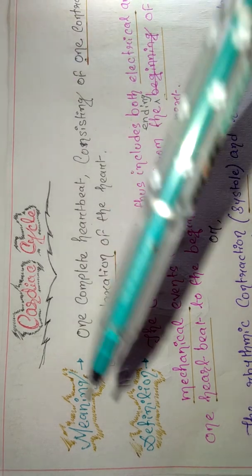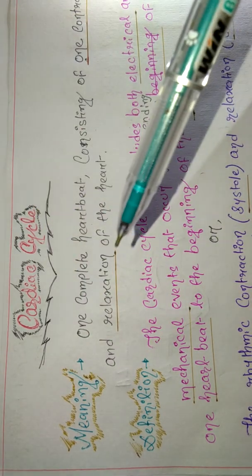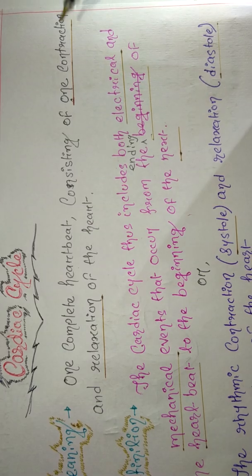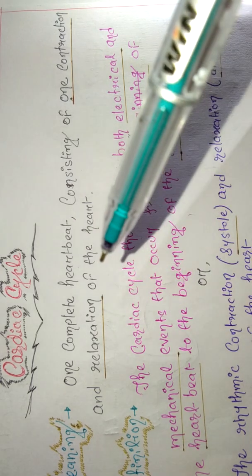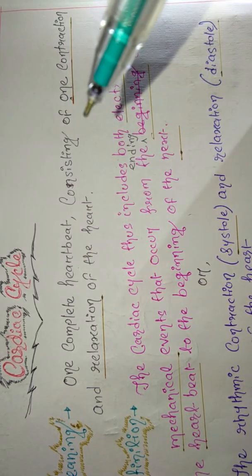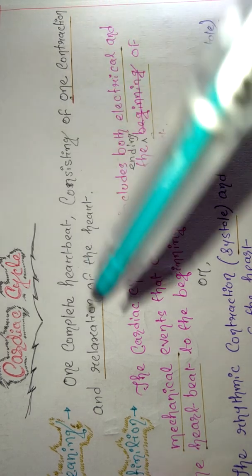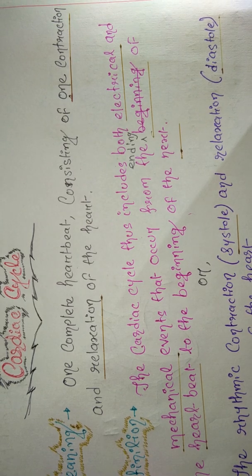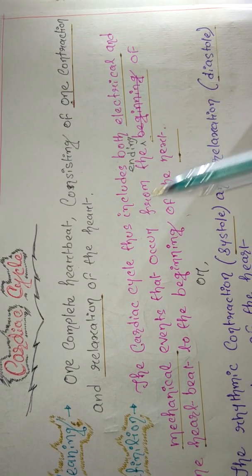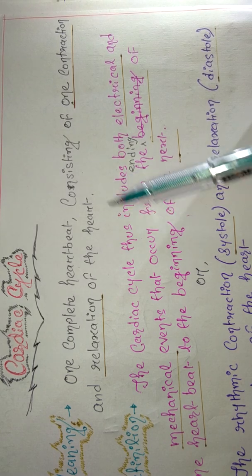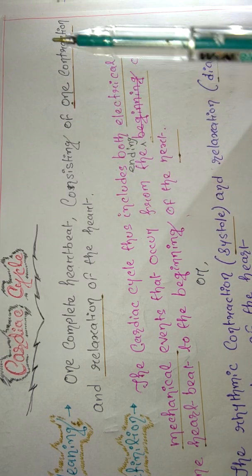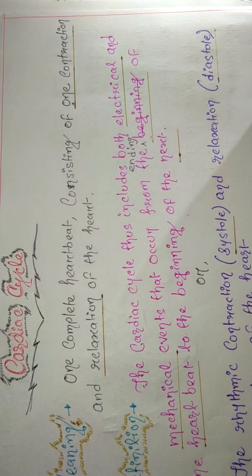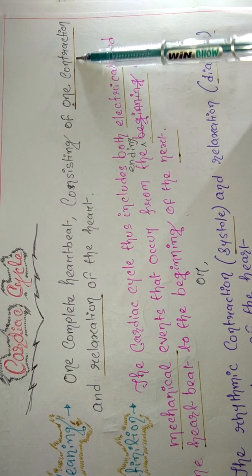Let's start with the meaning of cardiac cycle. One complete heartbeat consists of one contraction and one relaxation of the heart. The heart is a pumping organ — it fills with blood and then pumps it out.